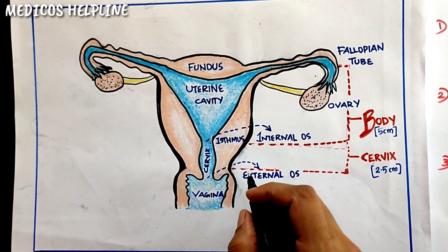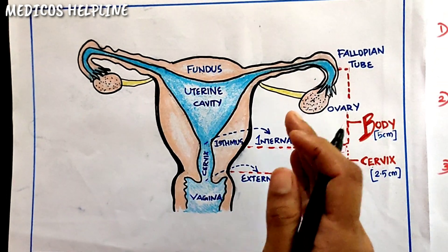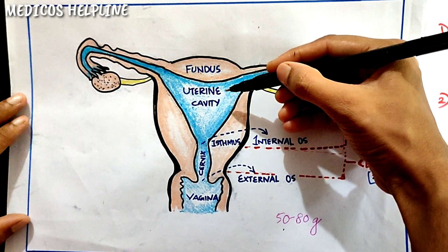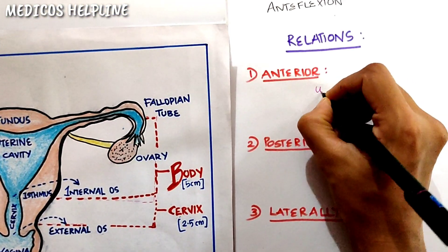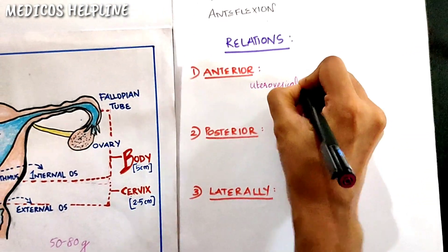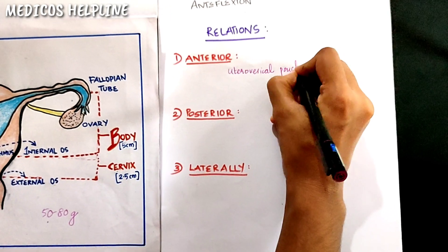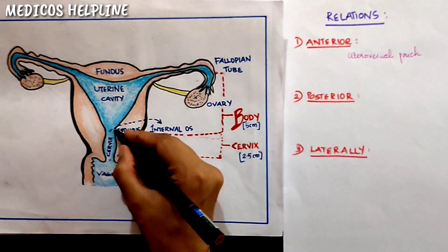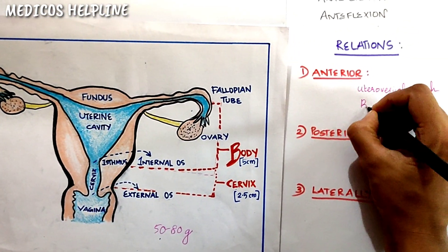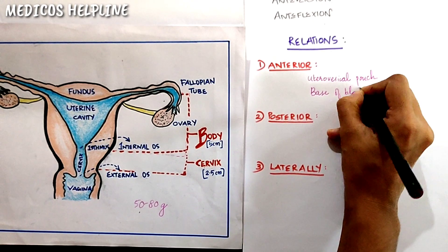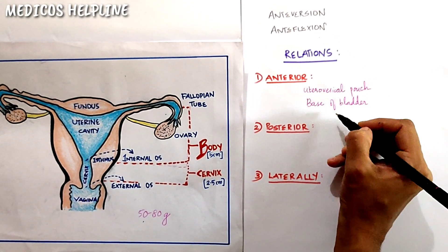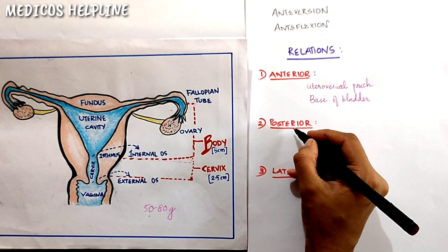Anteriorly, above the internal os, the uterus is related to the posterior wall of the uterovesical pouch. Below the internal os, the uterus is related to the base of the bladder. Hence, anteriorly, the uterus is connected to the uterovesical pouch and the base of the bladder.